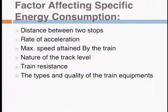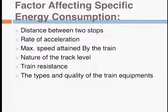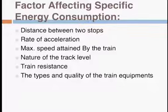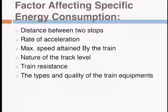Moving further, the factors which affect specific energy consumption are given below. Energy consumption in propelling the train is required for: first, having linear and angular acceleration; second, working against gravity while moving up the gradient; third, working against the resistance of motion; fourth, overcoming the losses due to the gearing system; and lastly, supplying losses in motors and other electrical systems. Energy is the product of power and time, and it depends upon the power required and the duration for which power is taken.